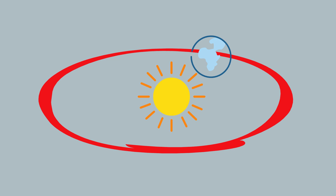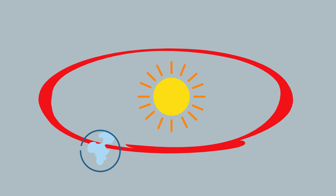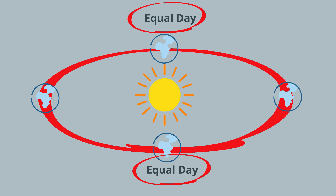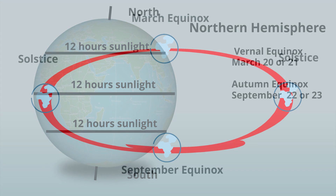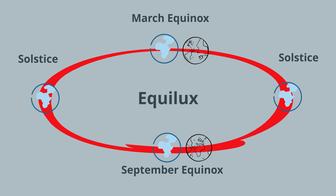Because the Earth is tilted at 23.5 degrees and also rotates and revolves around the sun, the length of the day varies throughout the year. During each equinox, both hemispheres receive almost equal amounts of sunlight — 12 hours of daylight and 12 hours of night time. The actual day in which both hemispheres receive exactly 12 hours of sunlight and darkness is called the equilux, and it usually occurs a couple of days before the March equinox and a few days after the September equinox in the northern hemisphere.